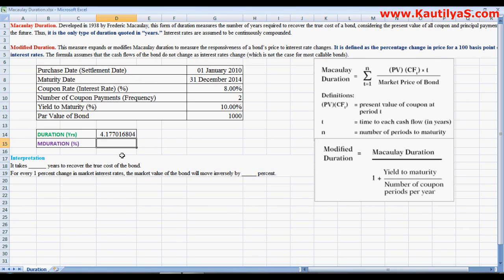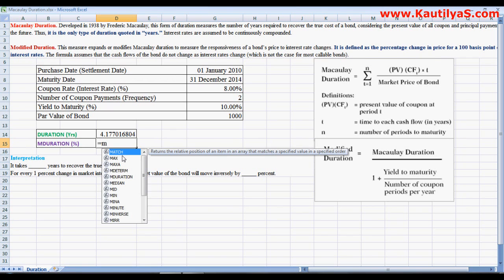Next we need to calculate the MDURATION, that is MDURATION is modified Macaulay duration. So modified Macaulay duration, there equals to MDURATION.